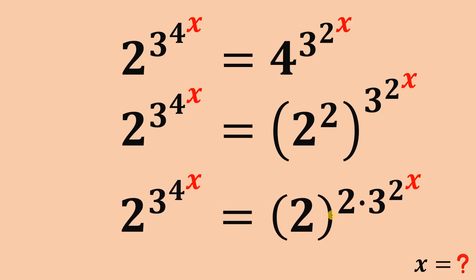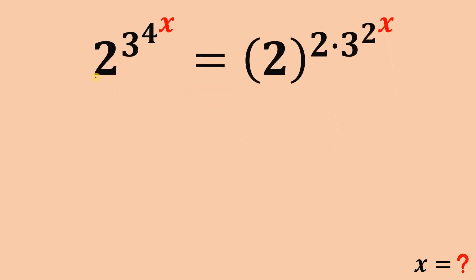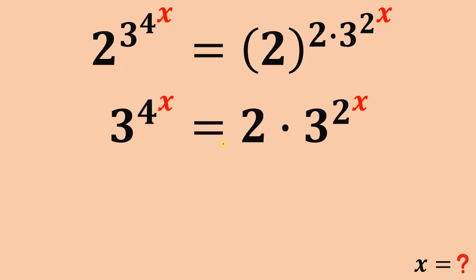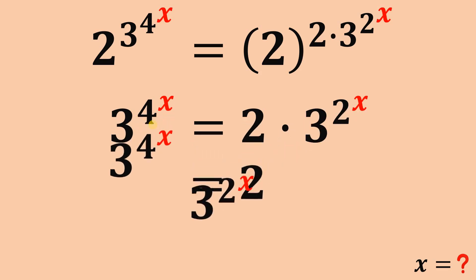Now focus on this equation. Since we now have the same base of 2 on both sides, we can say that their exponents must be equal. So we have 3 raised to the power of 4 raised to the power of x equals 2 times 3 raised to the power of 2 raised to the power of x. Next, we divide both sides by 3 raised to the power of 2 raised to the power of x, because we have base 3 on the left-hand side as well.